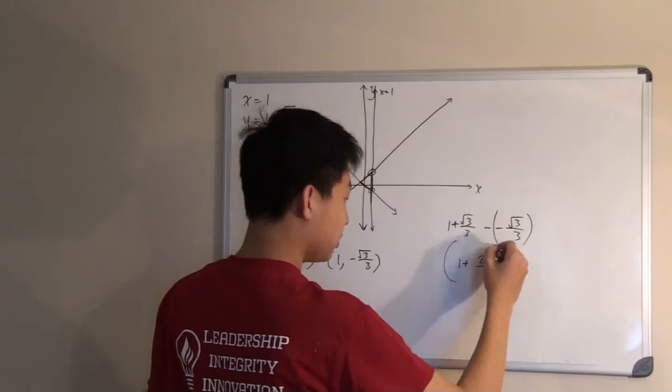And now, we multiply this by 3. And this would give us our final answer of 3 plus 2 root 3.